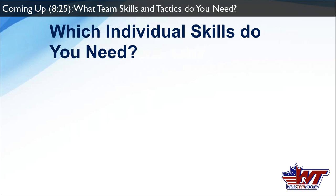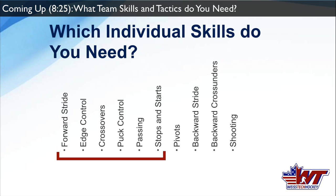So the next question is: which individual skills do you need to perform those three basic system goals for our U8 team? In this case: forward stride, edge control, crossovers, puck control, passing, and stops and starts. There's obviously more to the game, but this is the framework you think through. And yes, these answers change completely if you're working with triple-A midget players — but the questions are still the same: what systems do we want to focus on, and what skills are needed to perform them?